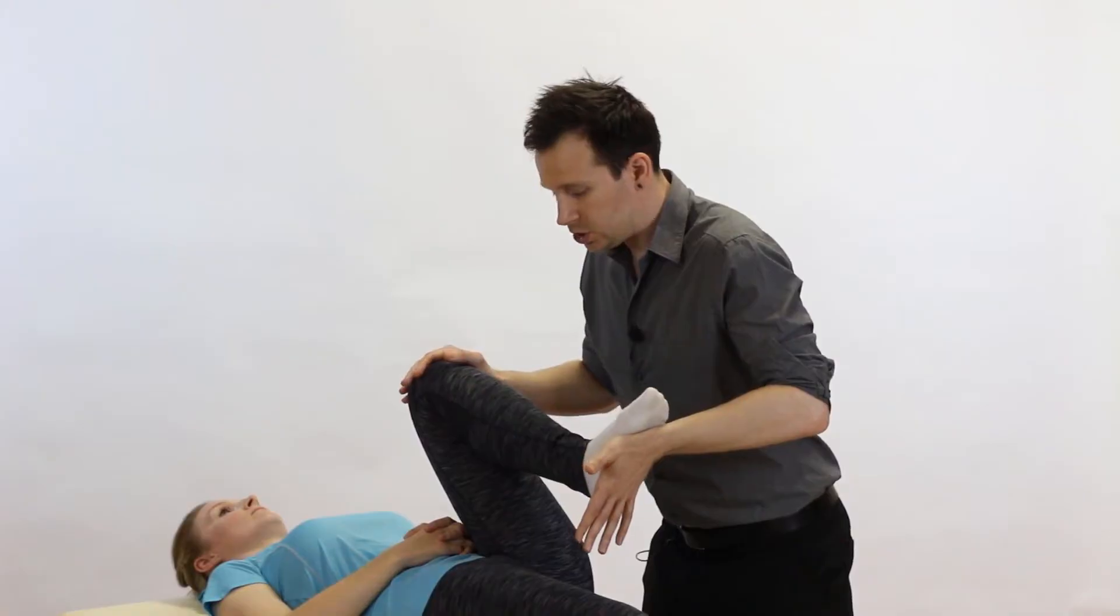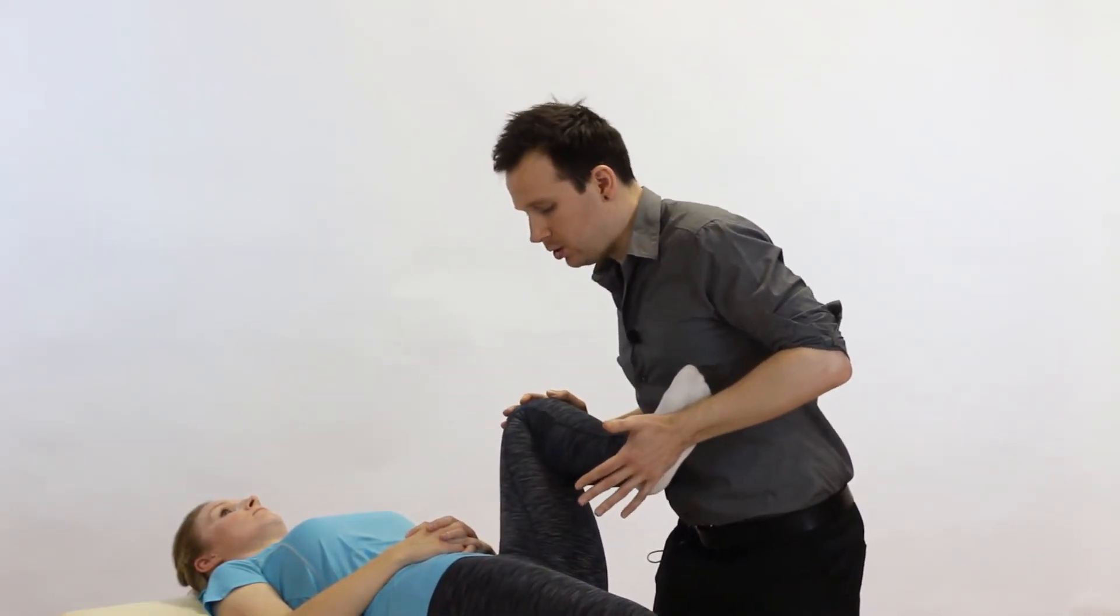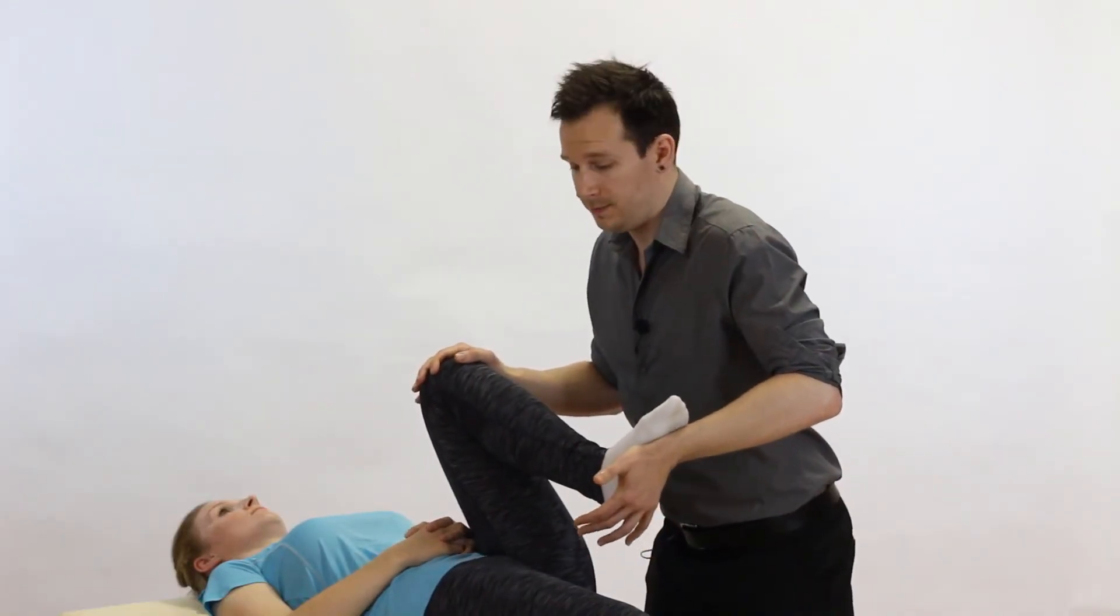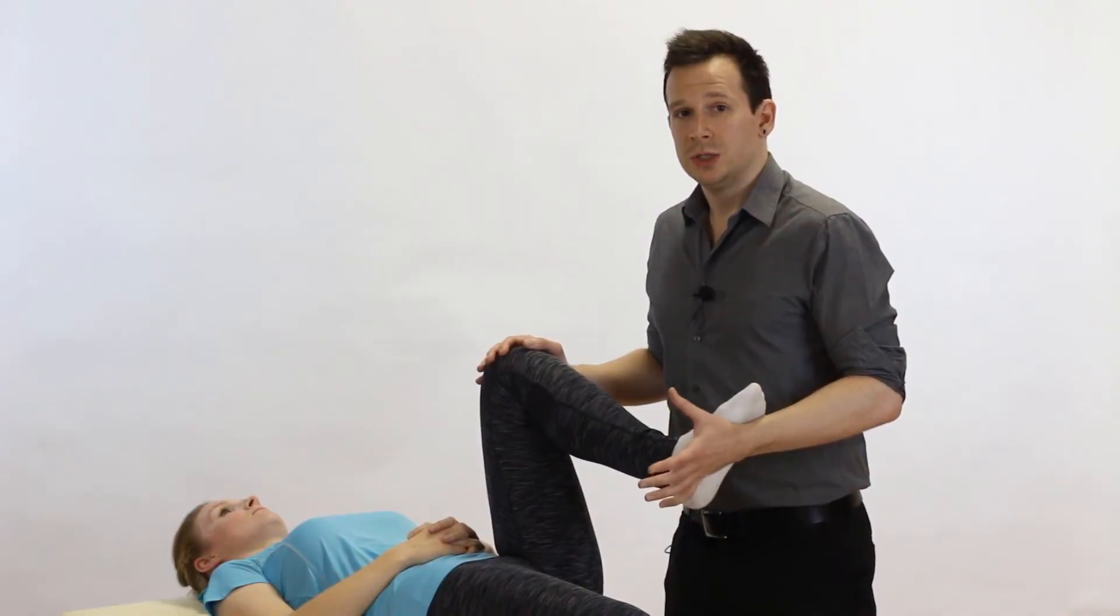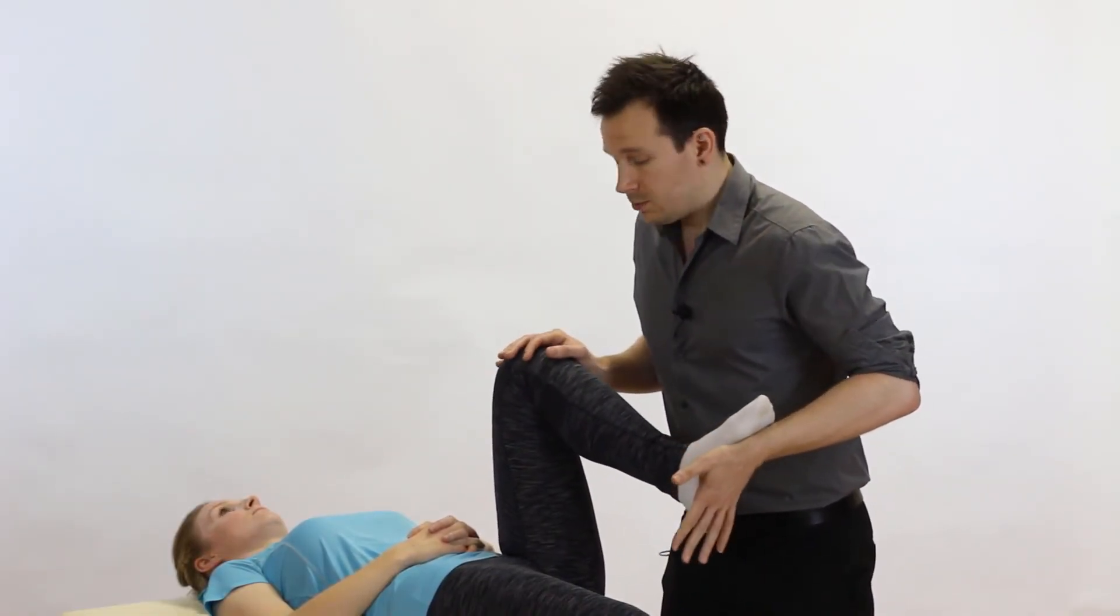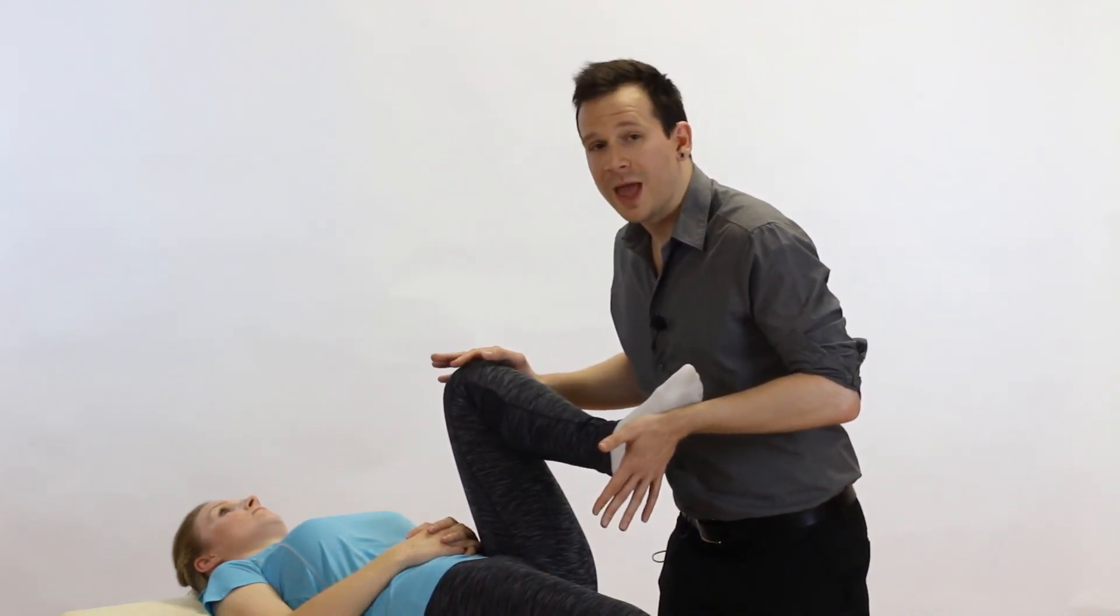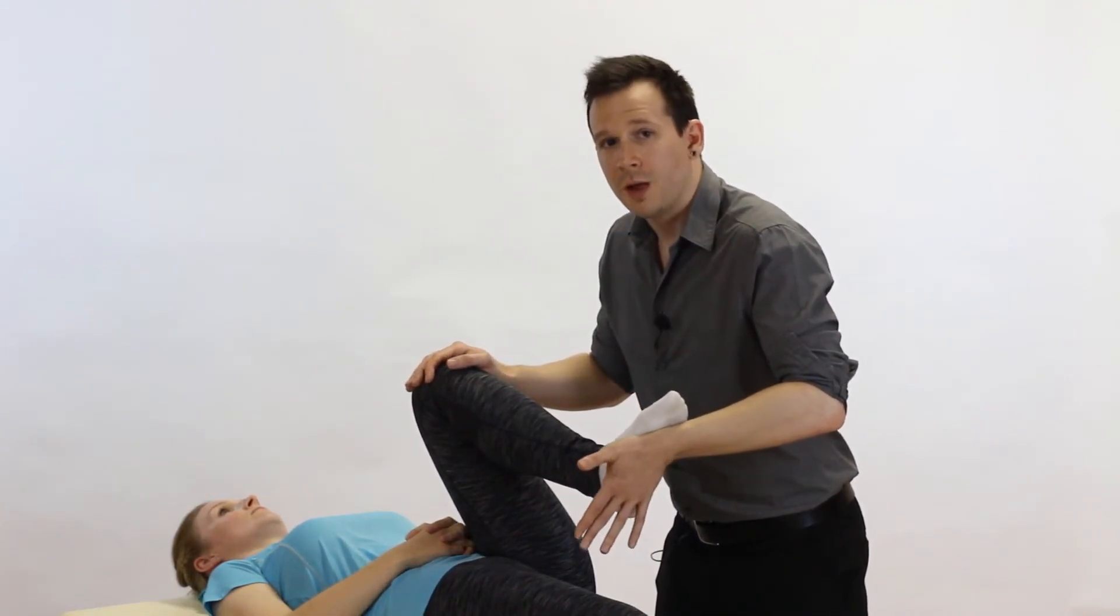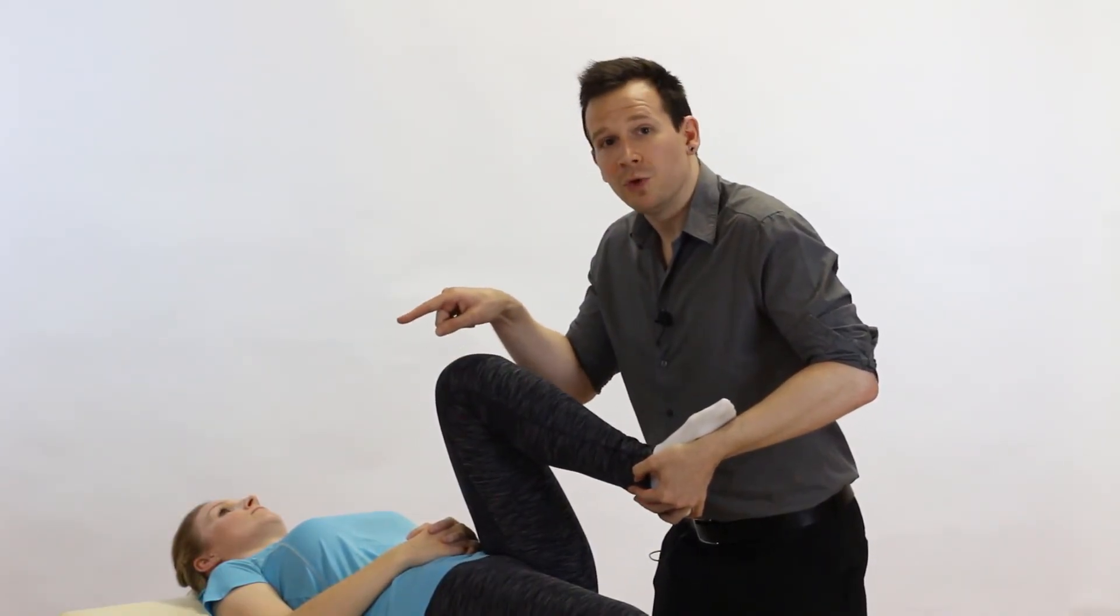So take that with a pinch of salt. But that's essentially the first one: full flexion, scoop into adduction and abduction, looking for reproduction of pain or clunking. The second version is designed to sort of maximize the compression on the quadrants, but it's exactly the same idea. So we come up into full flexion, adduction, and from here we add internal rotation.